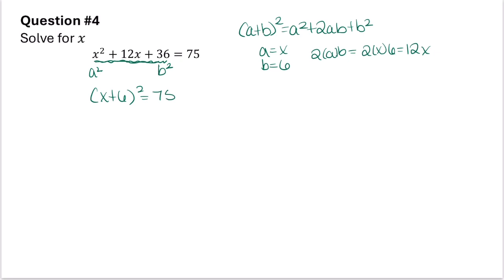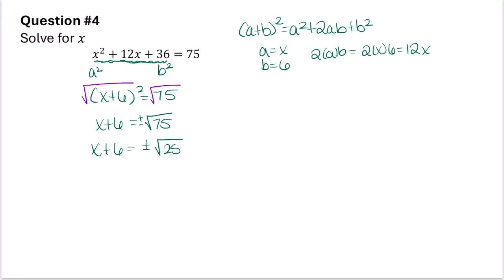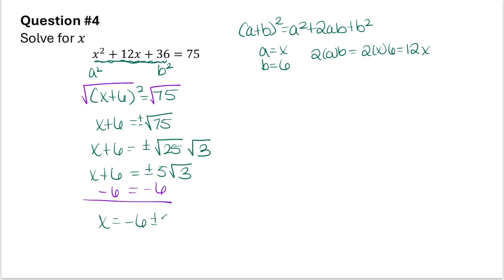To solve we need to take the square root of both sides, so x plus 6 equals plus or minus the square root of 75. Remember we need the plus or minus, and also remember to simplify the radical. We can rewrite this as x plus 6 equals plus or minus the square root of 25 times the square root of 3. The square root of 25 is 5, so x plus 6 equals plus or minus 5 square root of 3. Subtracting 6 from both sides gives x equals negative 6 plus or minus 5 square root of 3.